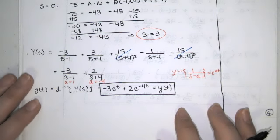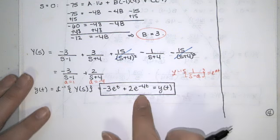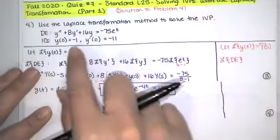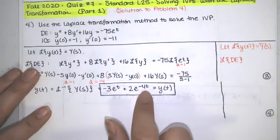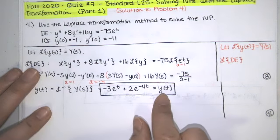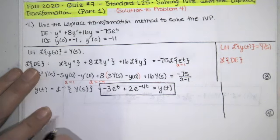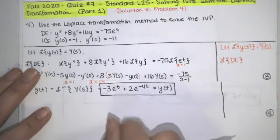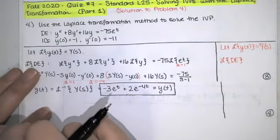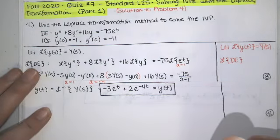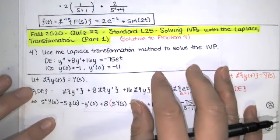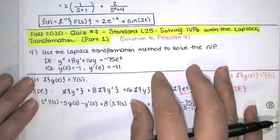We haven't fully confirmed it yet, but evaluating at t equals zero gives negative one, which is correct. Taking the derivative and evaluating at zero should give negative 11 — you can check that. And if you take the second derivative, add eight times the first derivative, and add 16 times the function, you'll get negative 75 e to the t, provided all steps are correct. That's how we solve problem number four from quiz number seven from the fall 2020 semester. See you in the next video where we'll cover the quiz problems for standard L26.